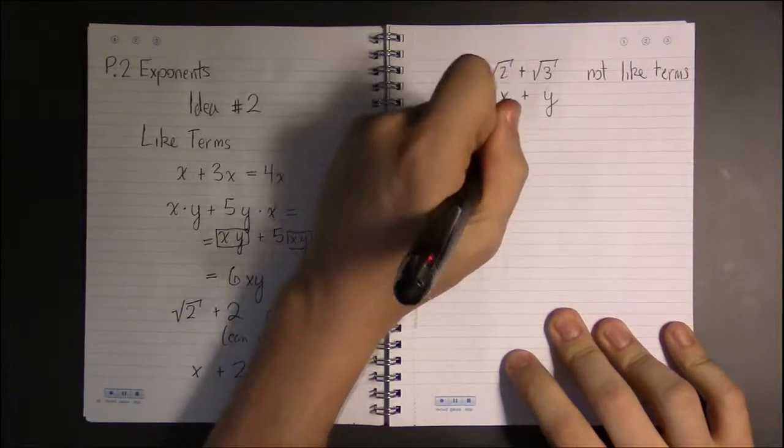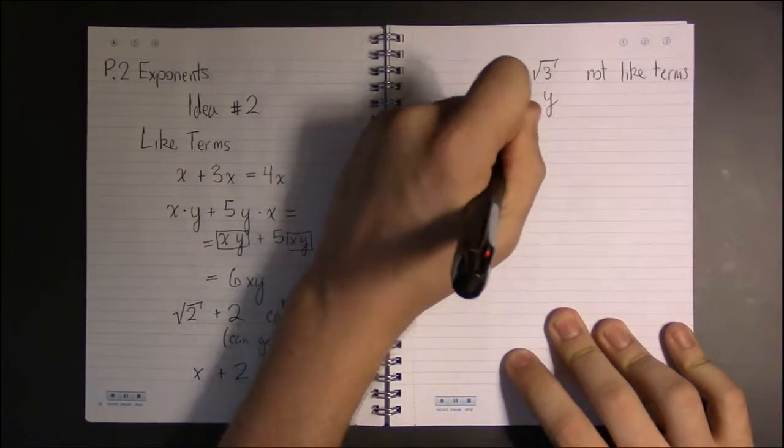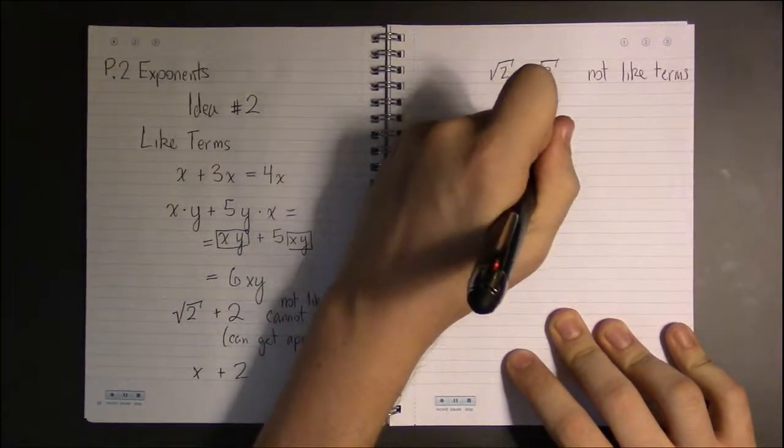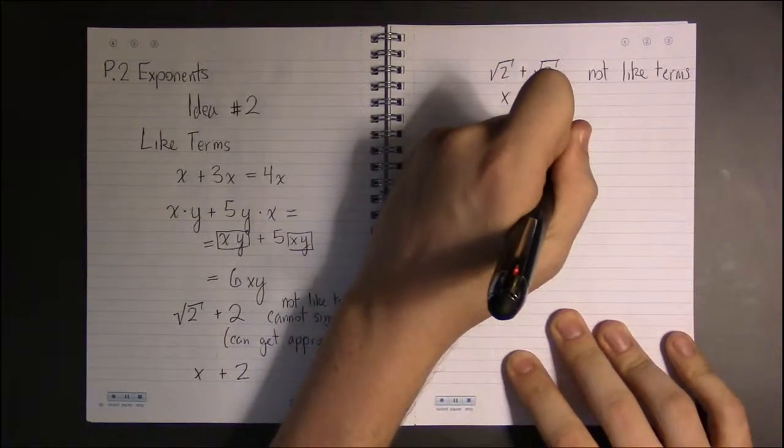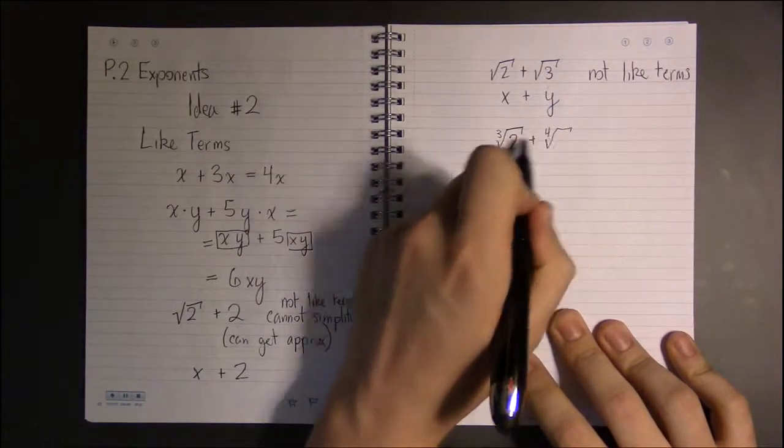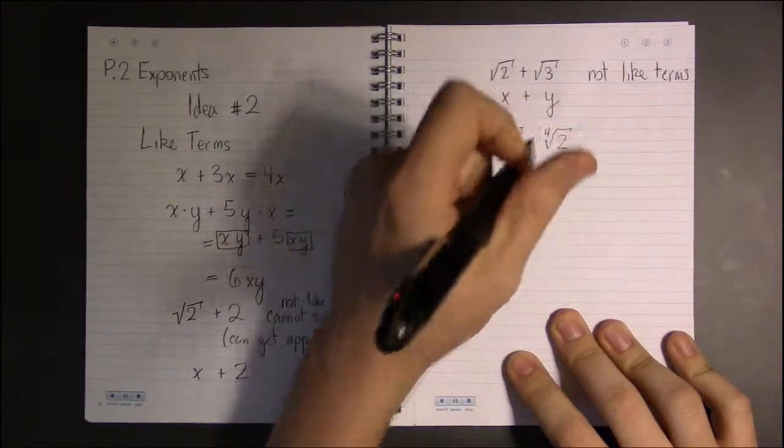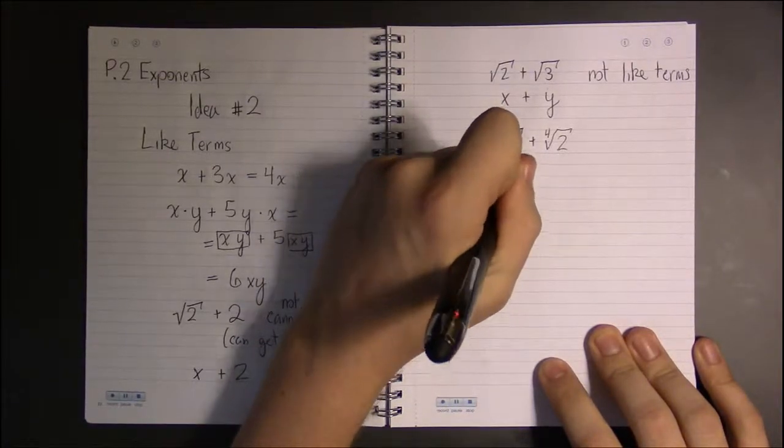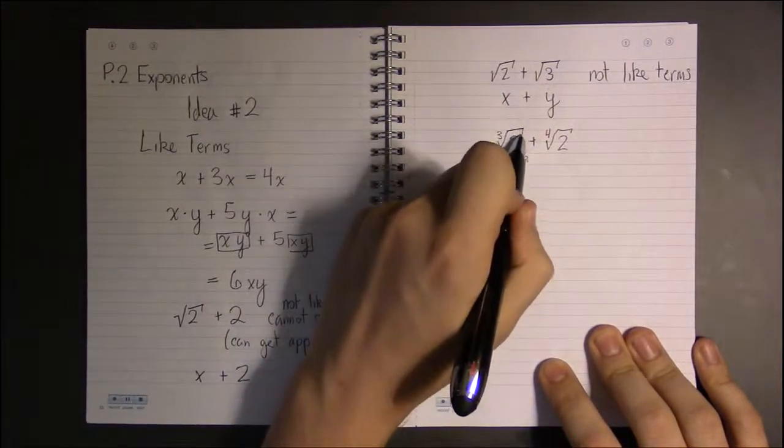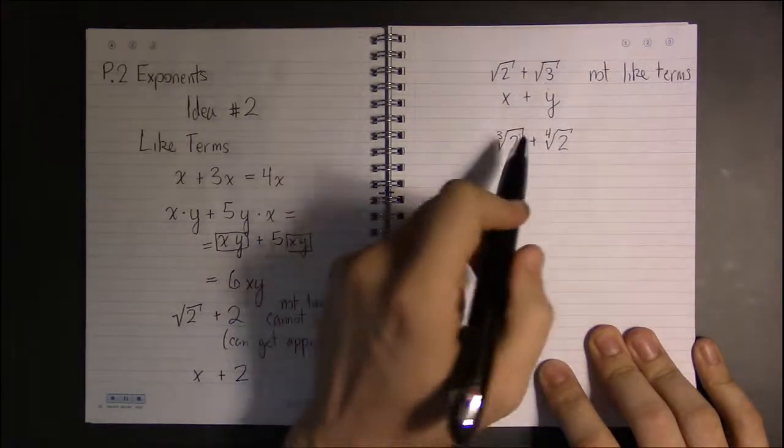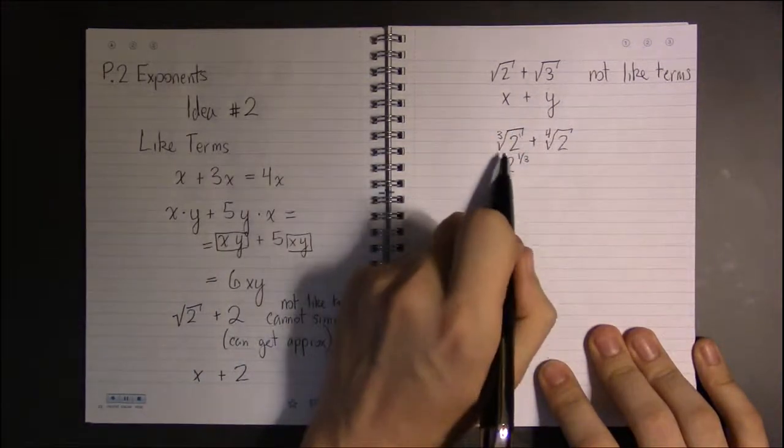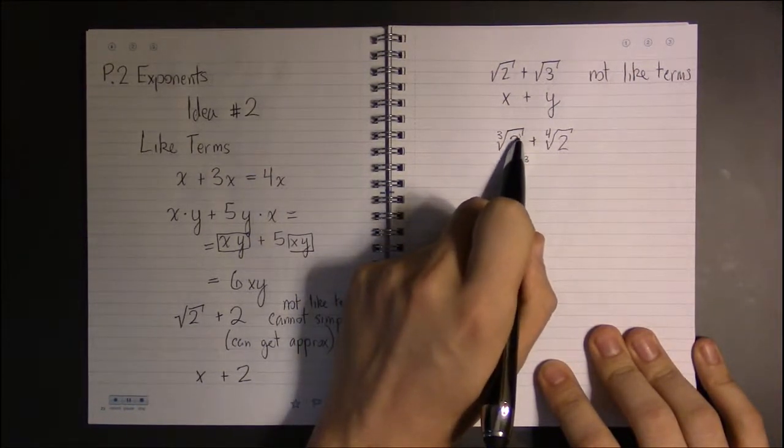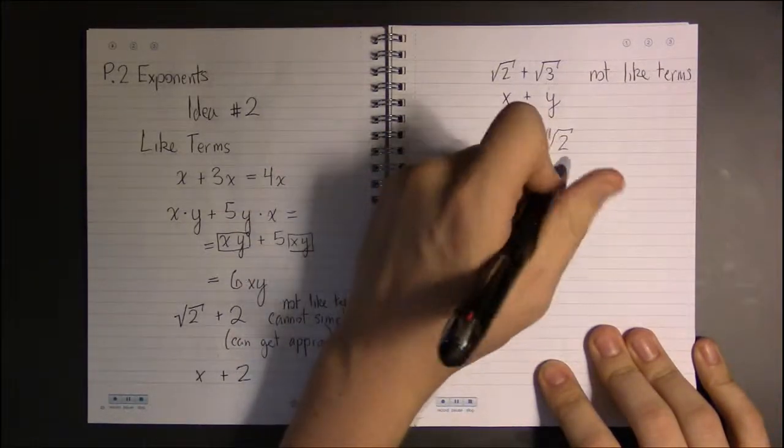But it's also true even if I have the same number inside but I have different numbers outside the radical. Here, what we call the index of the radical, this is kind of like saying, because if you think about this, this is 2 to the 1/3 because we can put 1 as the exponent of anything if it doesn't have an exponent on it. And remember we converted this to be a fraction where the number inside the radical was on top and outside the radical got put on bottom.